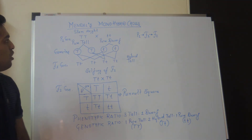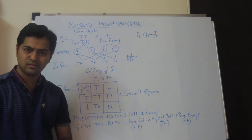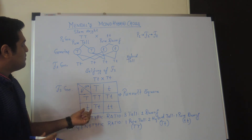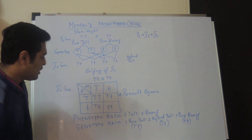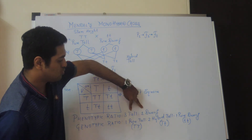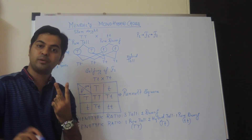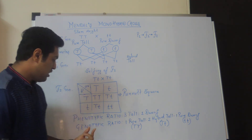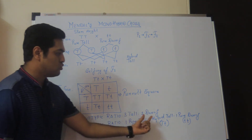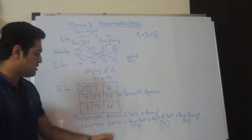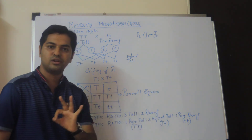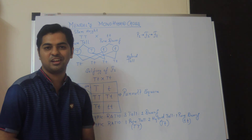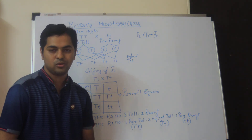This represents the complete explanation of Mendel's monohybrid cross. For entrance exam questions: the total number of phenotypes in monohybrid cross is 2 (phenotypic ratio 3:1), and the total number of genotypes is 3 (genotypic ratio 1:2:1). That is all about monohybrid cross, and in the next video we shall take dihybrid cross as well. Thank you.